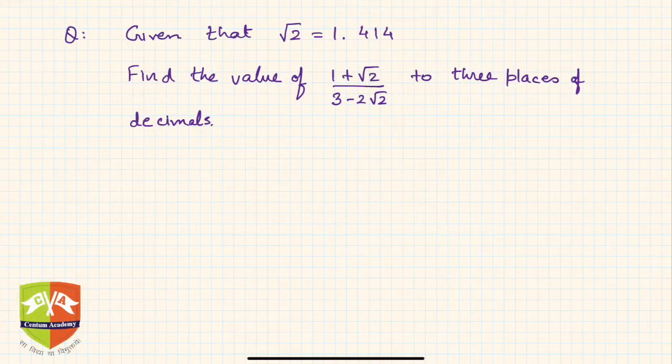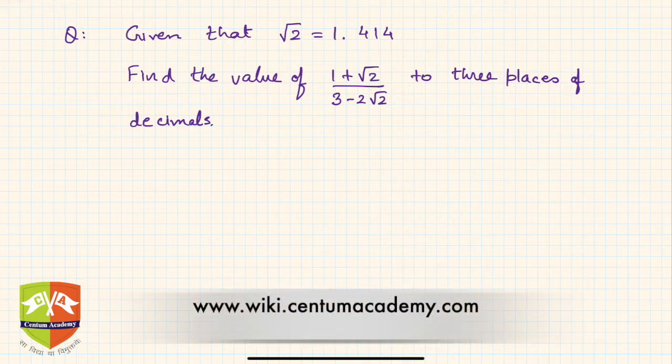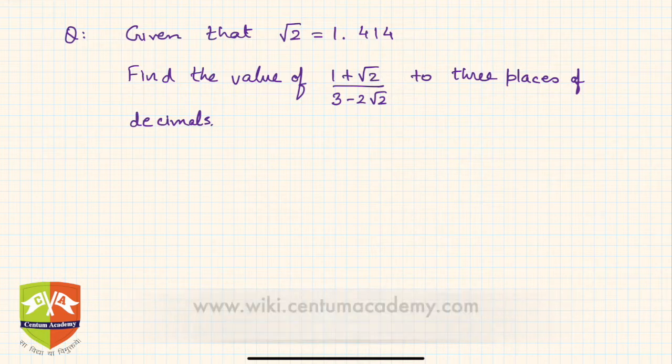Hello friends, welcome again to this session on surds. Today we are going to learn the application of rationalization. If you have not learned rationalization, I would suggest going through the rationalization sessions first. In this question, it is given that root 2 equals 1.414, and you have to find the value of 1 plus root 2 divided by 3 minus 2 root 2 to three places of decimals.